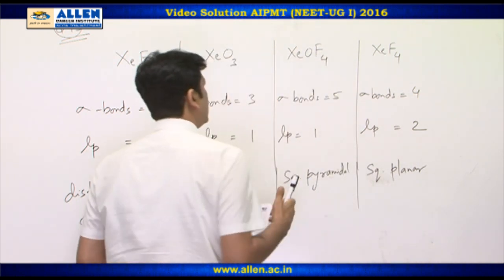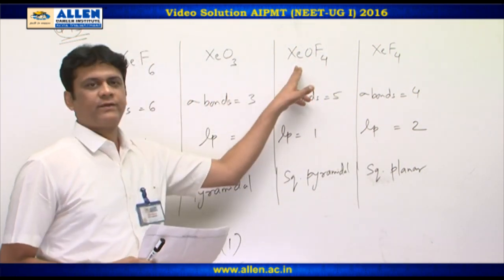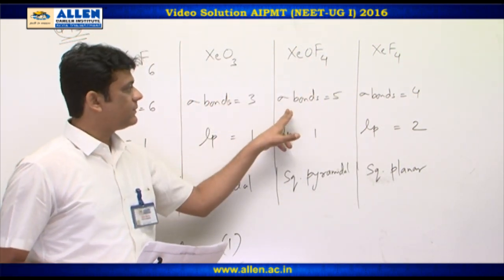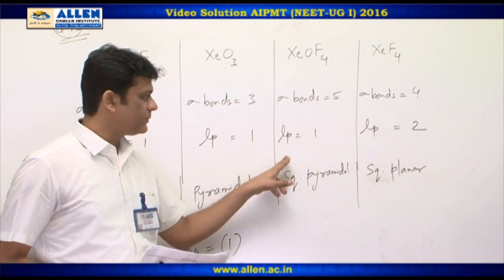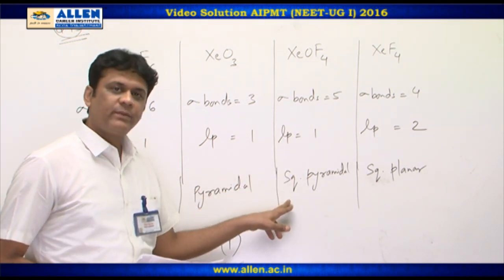And in xenon oxytetrafluoride, the number of sigma bonds are 5 and lone pairs being 1, the shape should be square pyramidal.